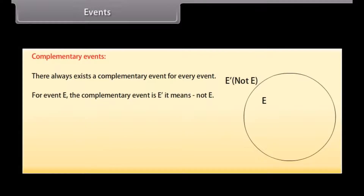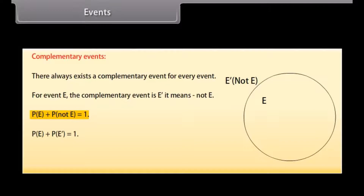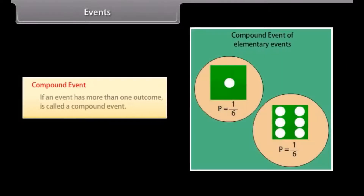Complementary events: there always exists a complementary event for every event. For event E, the complementary event is E' (not E). P(E) + P(not E) = 1, so P(not E) = 1 − P(E). Compound event: an event that has more than one outcome is called a compound event.